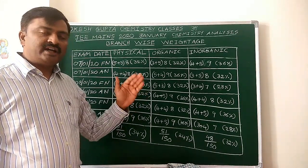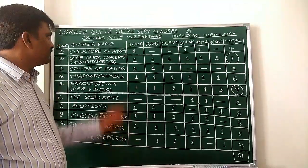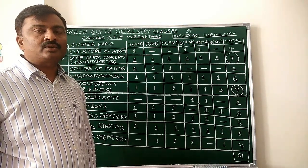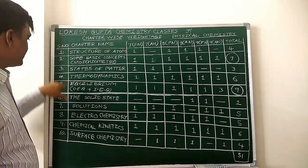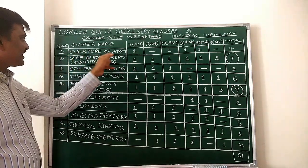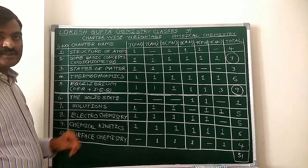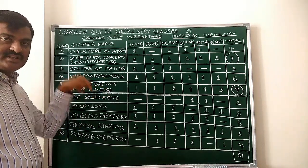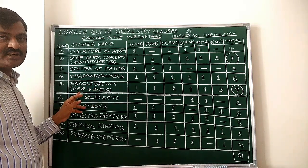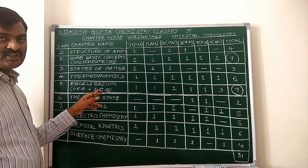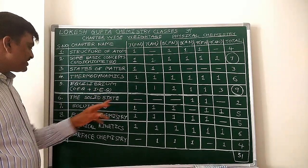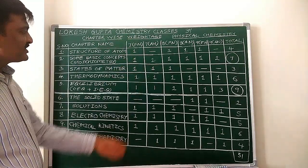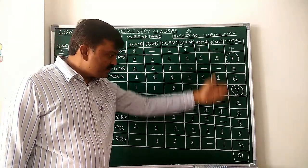Now I am going to give another analysis — chapter-wise weightage. First, let me explain Physical Chemistry. As per NCERT, there are 10 chapters in Physical Chemistry: first year chapters are Atomic Structure, Stoichiometry, Gaseous State, Thermodynamics including Thermochemistry, and Equilibrium — which is the combination of Chemical Equilibrium and Ionic Equilibrium, meaning acids and bases. Second year chapters are Solid State, Solutions, Electrochemistry, Chemical Kinetics, and Surface Chemistry.